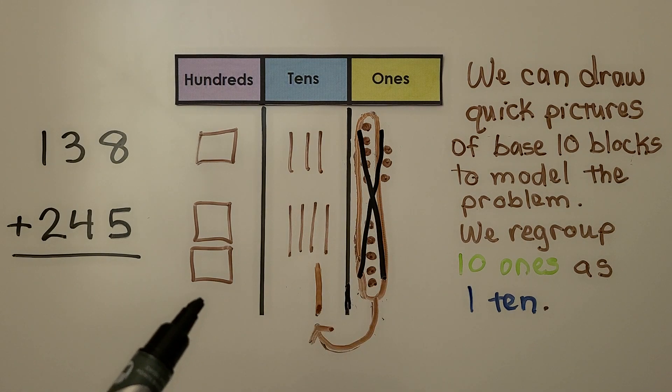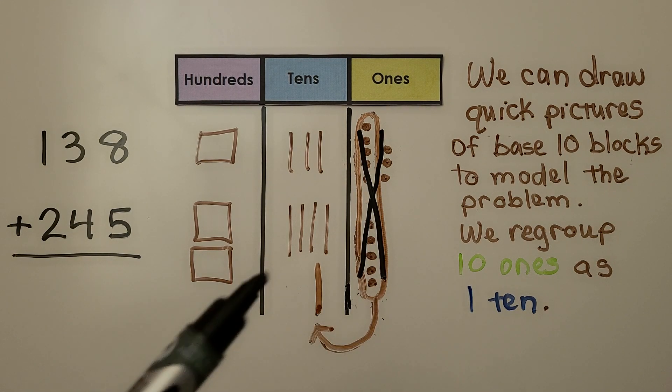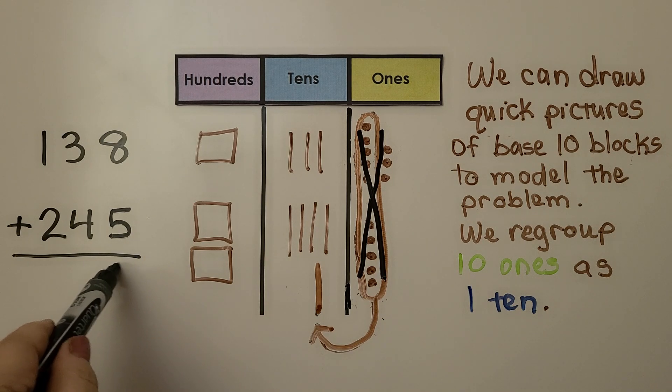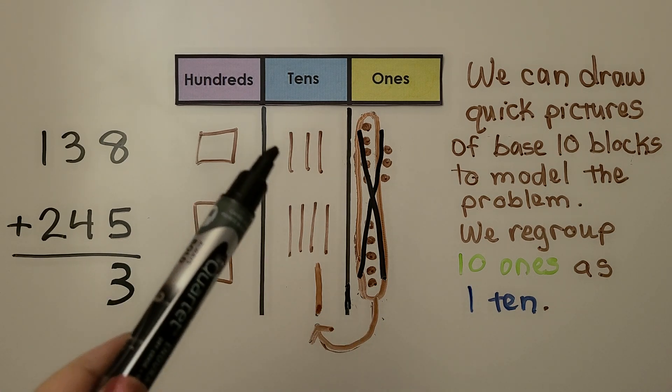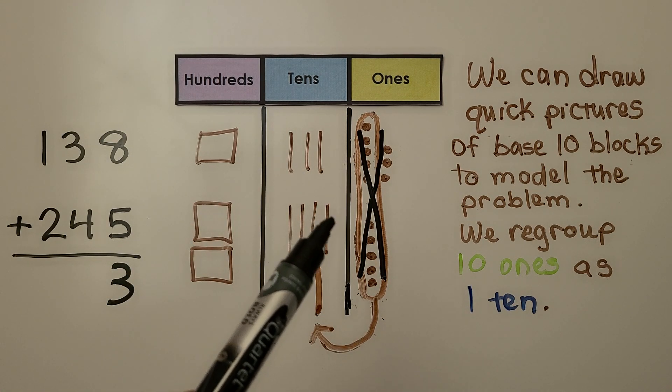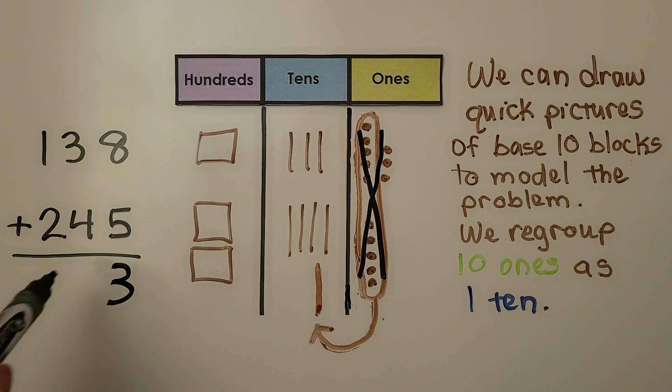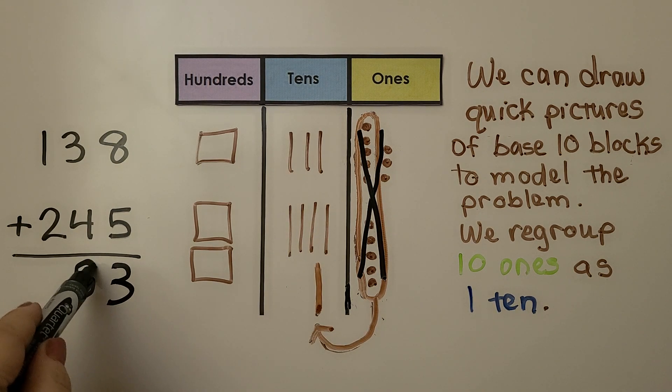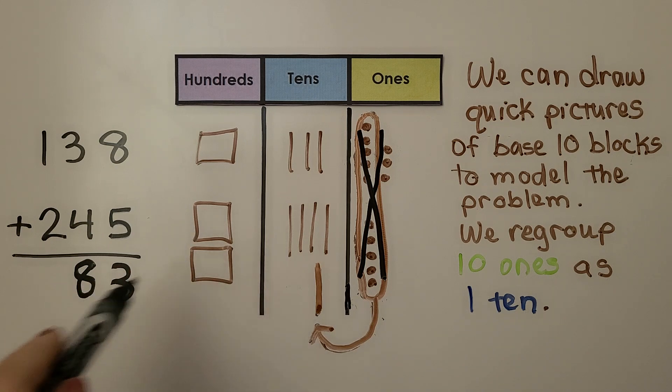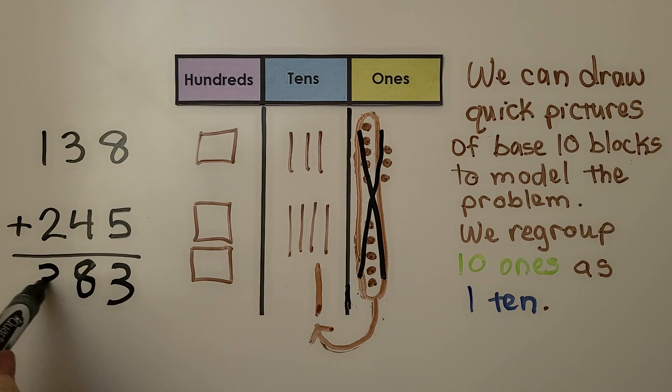Now we can see we have three ones. We have three, four, five, six, seven, eight tens. We have one, two, three hundreds. It's 383.